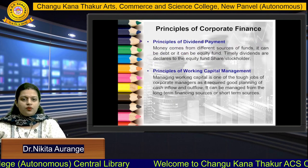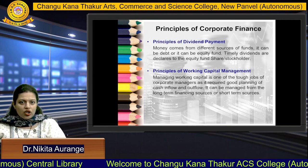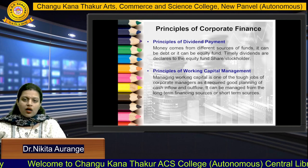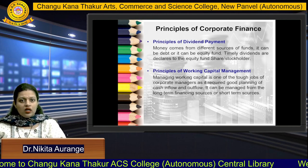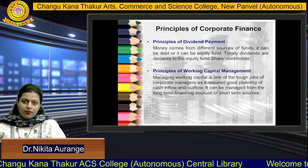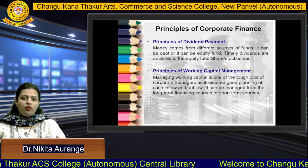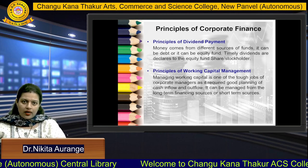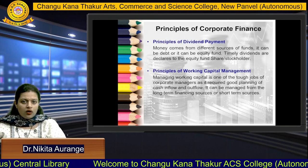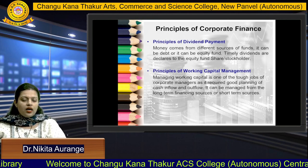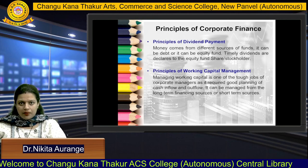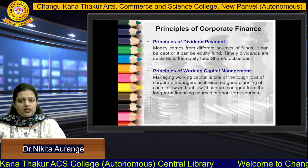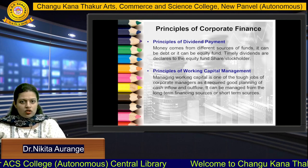The next principle is the principle of dividend payment. Dividends are issued to preferred shareholders or equity shareholders. If the company has acquired funds, taken loans, or shareholders have given money to the business, that money can come from different sources of funds. It is the duty of the company or organization — whether they have borrowed debt or are enjoying equity funds — to decide how much dividend is to be paid according to each shareholder's percentage involvement in share investment. These dividends should be paid to equity shareholders or other stockholders.